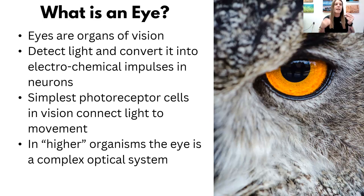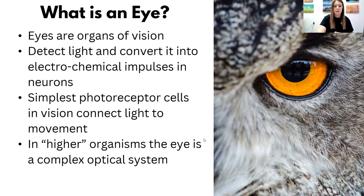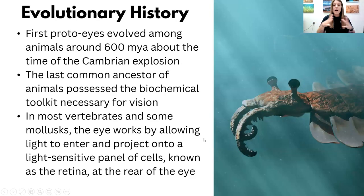It's a very complex system and it does it so quickly. When people see something, they convert that into signals and impulses to the brain very, very quickly. So how did eyes evolve? The first proto-eyes evolved about 600 million years ago.